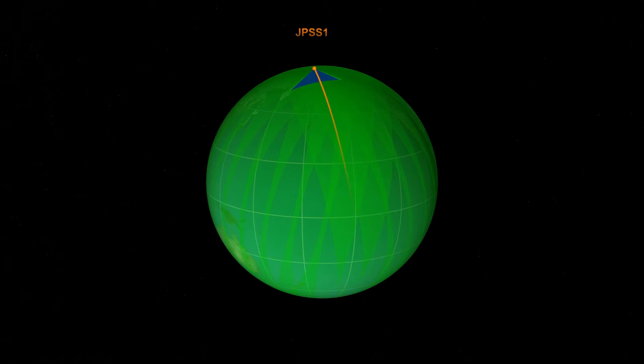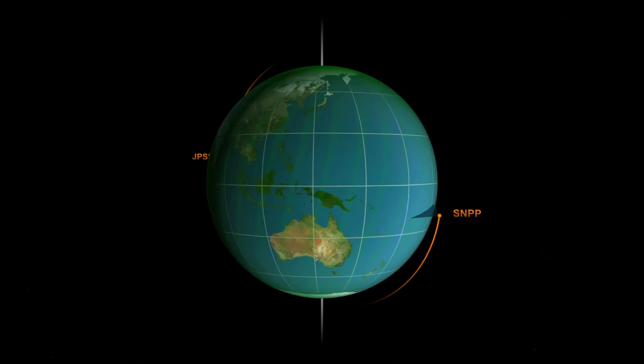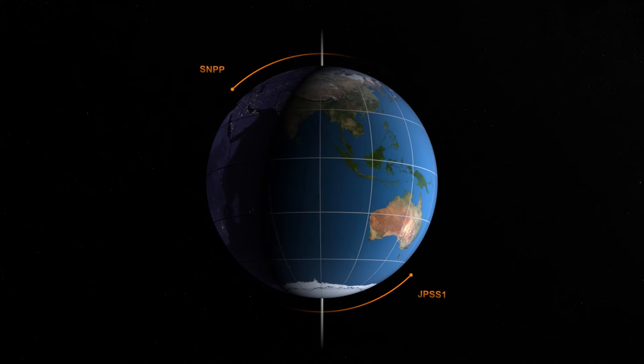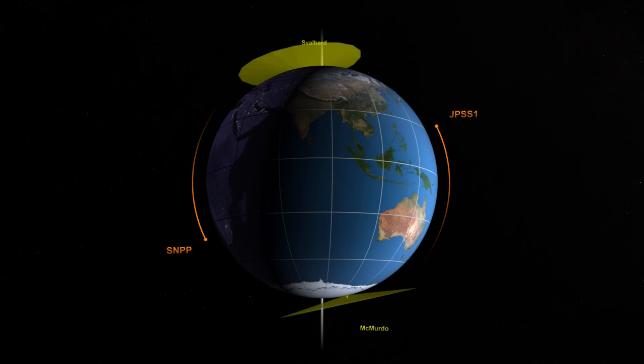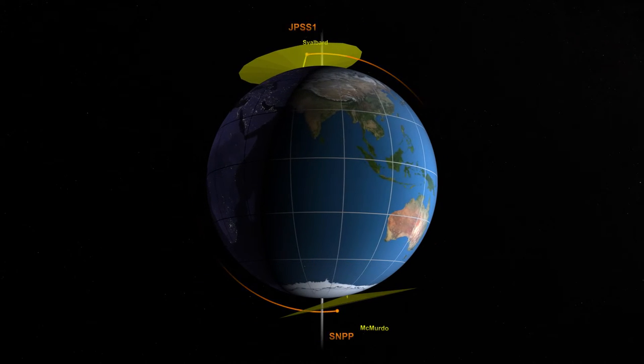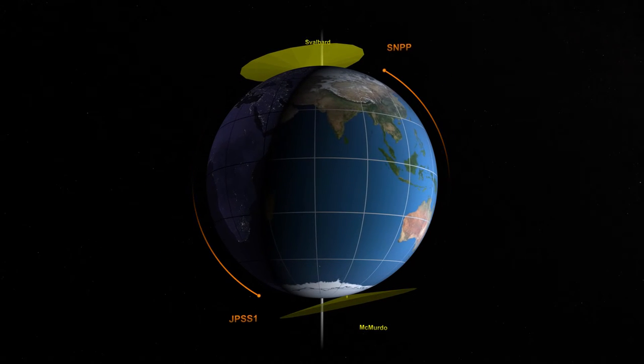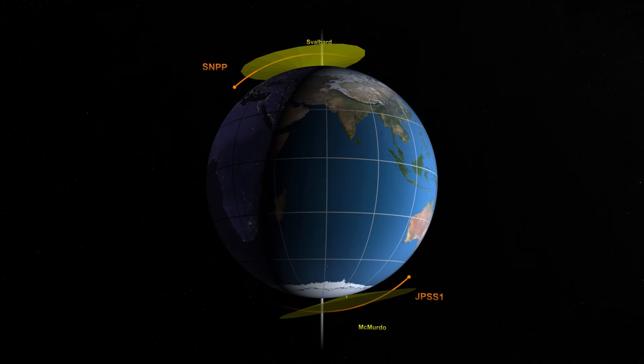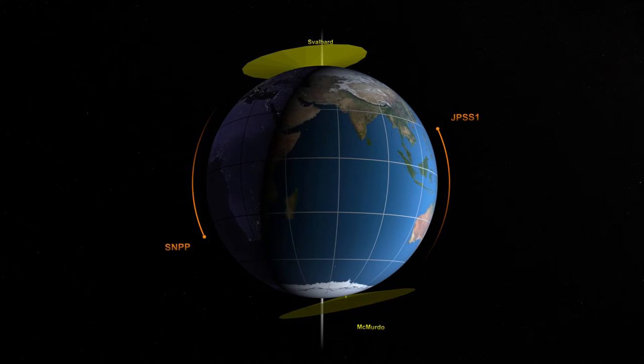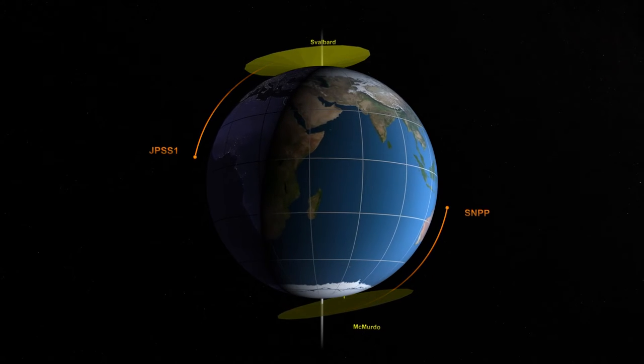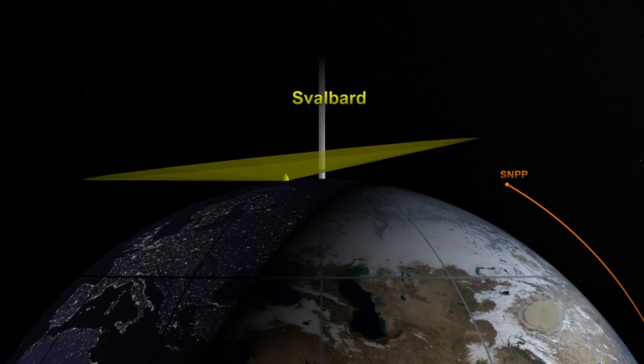Now that the satellites have collected data, we need to send observational data back to Earth for processing and use. At this stage, the JPSS constellation uses two ground stations: Svalbard, Norway, near the North Pole, and McMurdo Station, Antarctica, near the South Pole. The yellow cones shown here represent the local field of view of the ground stations, which is approximately five degrees above the local horizon projected into space.